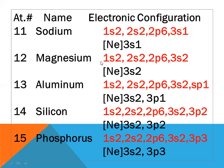Aluminium, atomic number thirteen: configuration 1s2 2s2 2p6 3s2 3p1. The inner subshell 1s2 2s2 2p6 matches neon, so we place neon and the valence configuration is [Ne] 3s2 3p1. Silicon, atomic number fourteen: configuration 1s2 2s2 2p6, which is the inner neon configuration. The valence configuration is [Ne] 3s2 3p2. Phosphorus, atomic number fifteen: configuration 1s2 2s2 2p6 3s2 3p3. We replace 1s2 2s2 2p6 with neon, giving [Ne] 3s2 3p3.